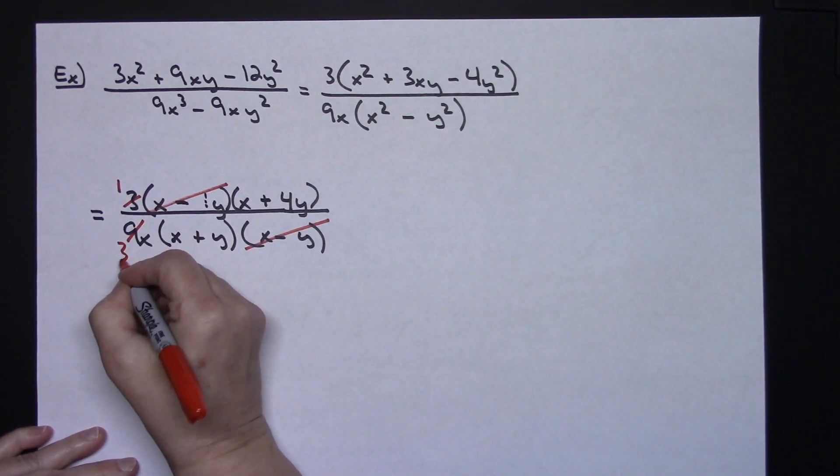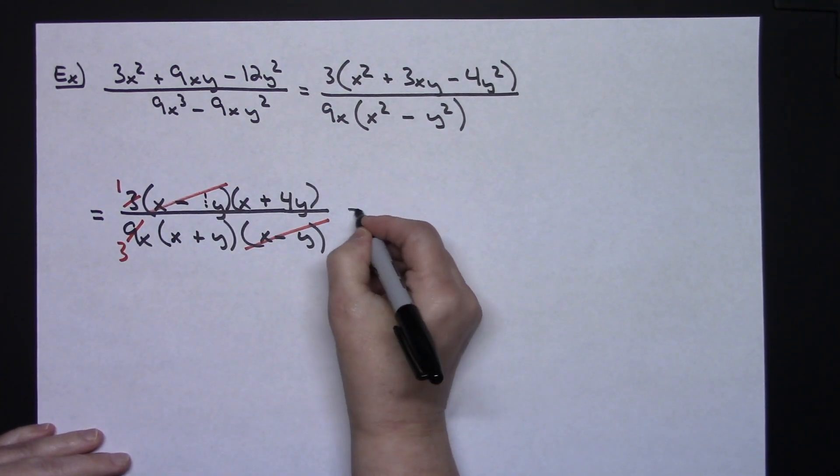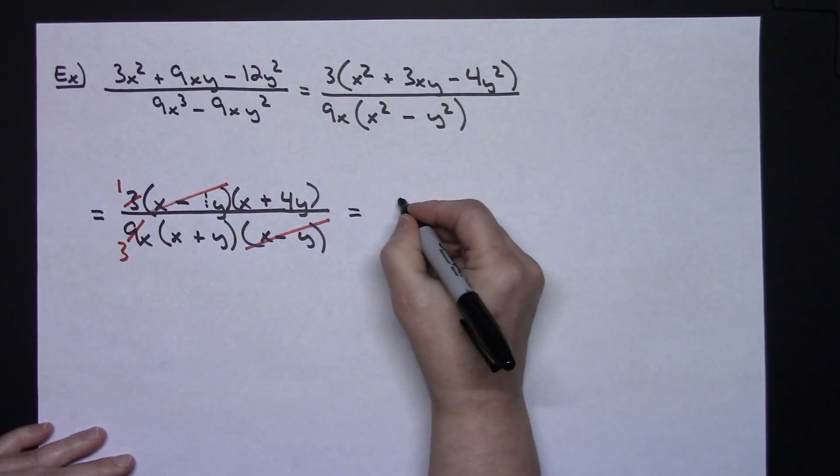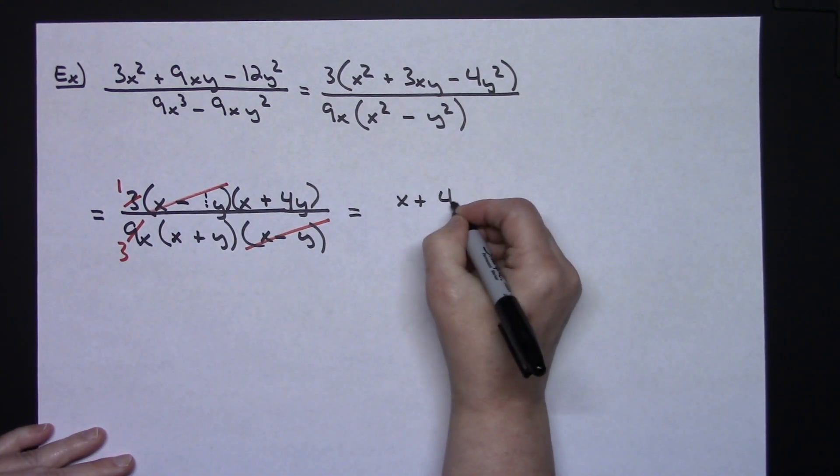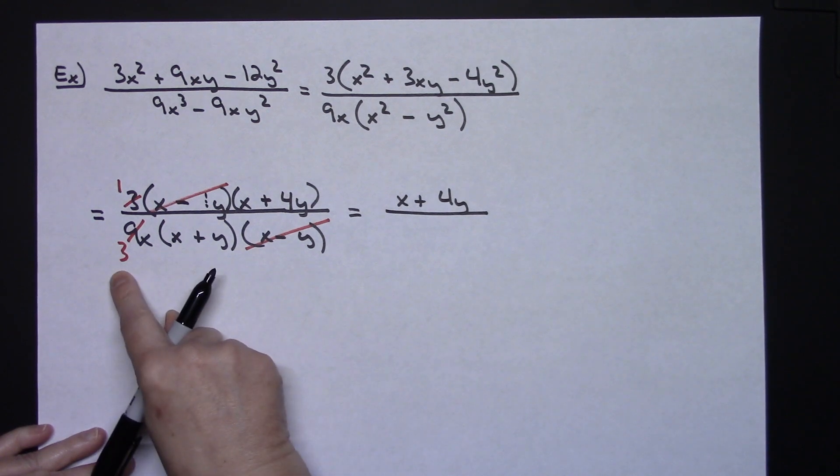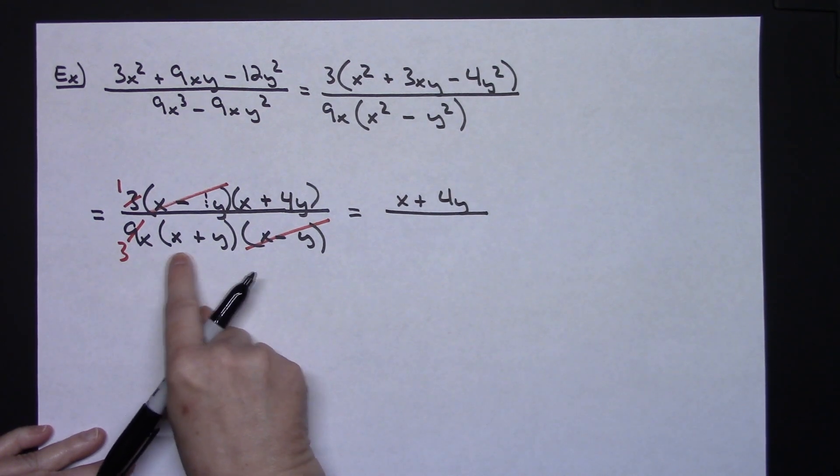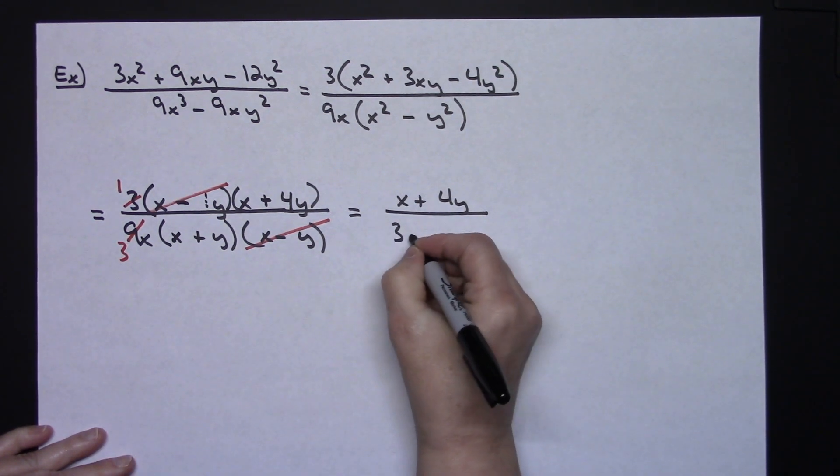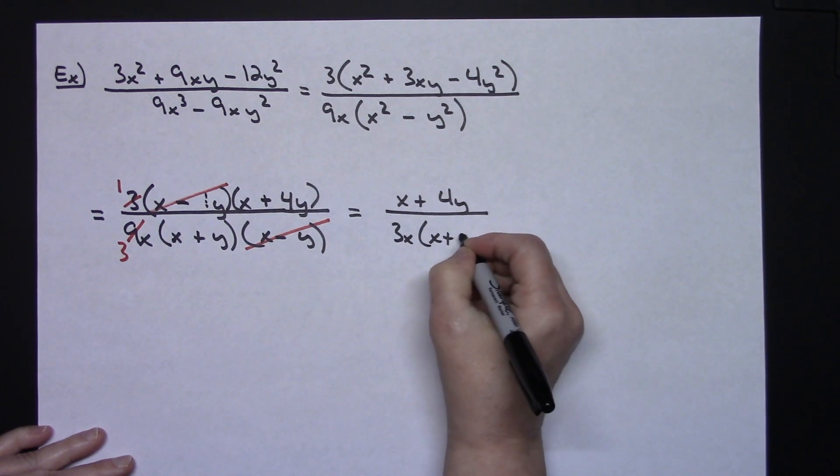All right as a final answer then across the top I've got an x plus a 4y and on the bottom I've got a 3, an x, and an x plus y. So a 3x and then an x plus y.